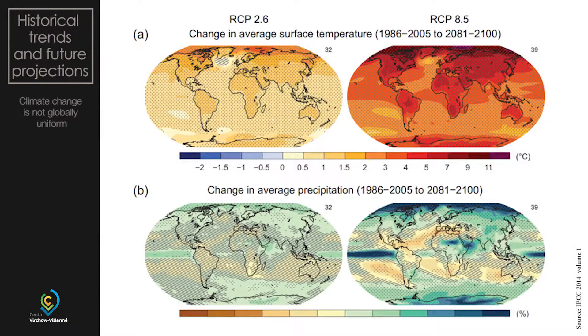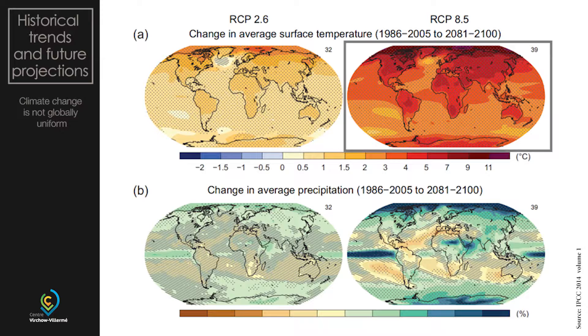Welcome back to the second part of the basics of climate change for people interested in health. What you see here are projections of the future — the geographical display of where warming occurs most, shown in the upper two graphs, and where rainfall increases or decreases. Let's focus on the right upper graph, which is the toughest scenario with the largest warming effect.